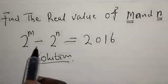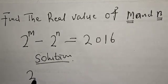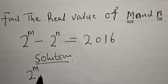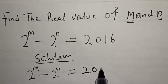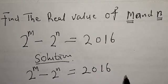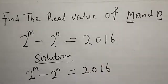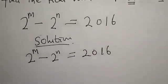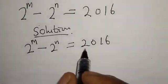The given equation: we have 2 raised to power m minus 2 raised to power n is equal to 2016, and the question says we should find the real value of m and n.